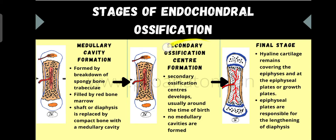The next stage is secondary ossification center formation. The epiphysial regions — the two ends of the bone — start developing secondary ossification centers. You can see the two secondary ossification centers here. One key difference is that when ossification completes at the secondary ossification centers, there is no formation of a medullary cavity, unlike what happens at the primary ossification center.